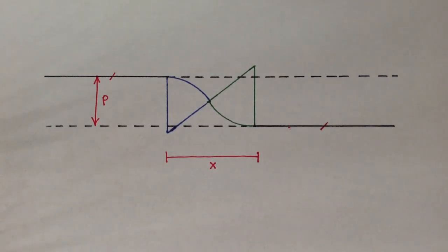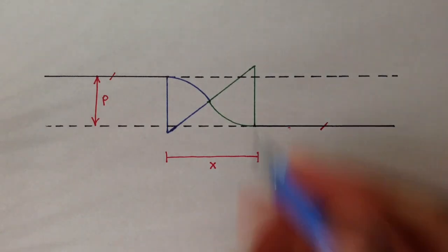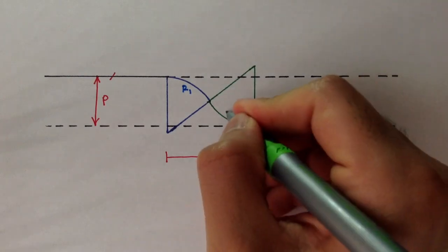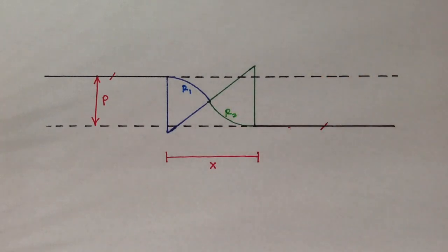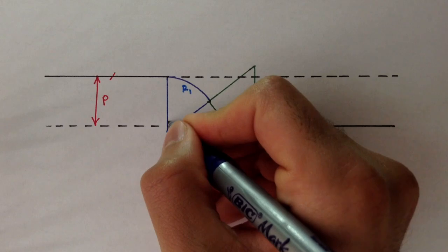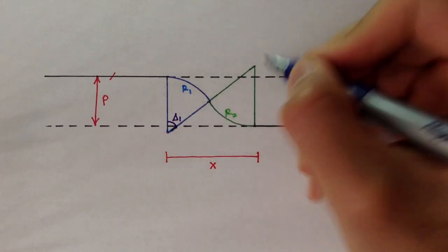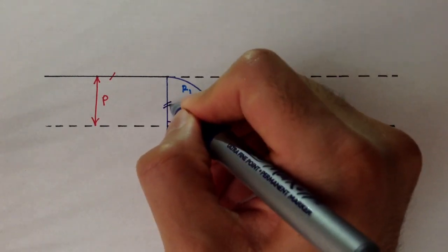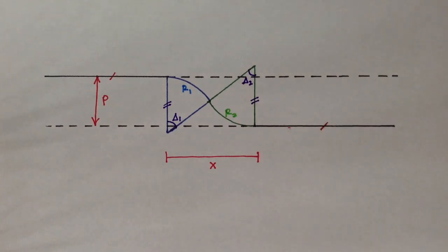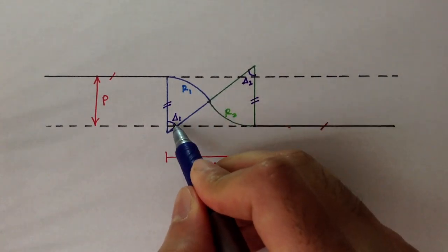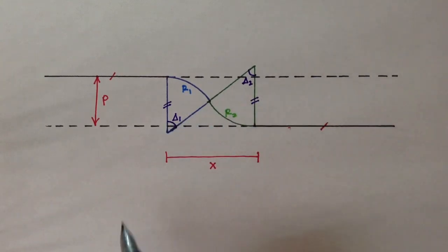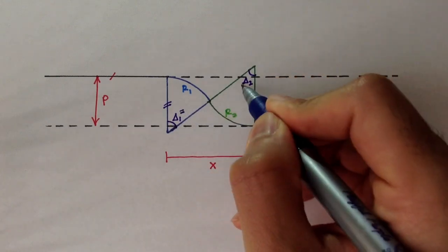The first thing we want to do is look at one curve at a time. We have curve 1 with radius 1, and curve 2 in green with radius 2. This angle is the interior angle for curve 1, and this angle is the interior angle for curve 2. Since these two lines are parallel to one another, these angles are alternate interior angles — meaning delta 1 is equal to delta 2.